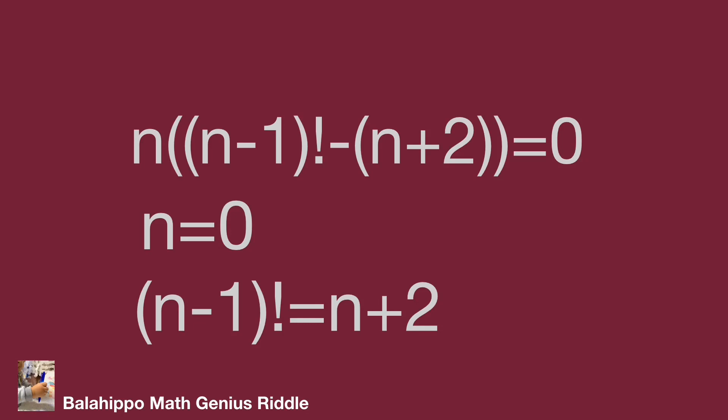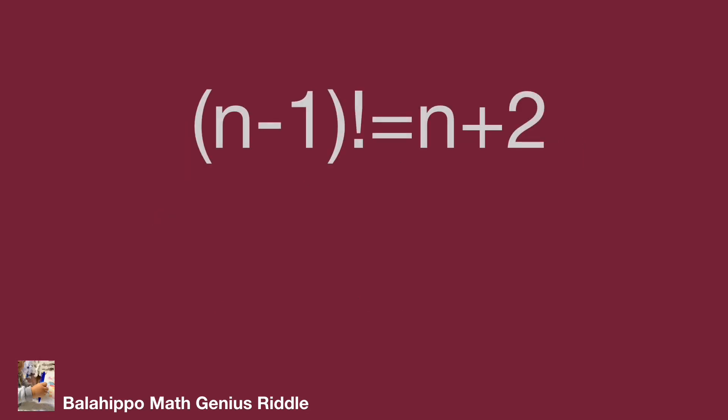So either n equals 0 or (n minus 1) factorial minus (n plus 2) equals 0. For n equals 0: 0 factorial equals 1, and n squared plus 2n equals 0, so n equals 0 is not the answer. Therefore, let's check the equation (n minus 1) factorial equals n plus 2.